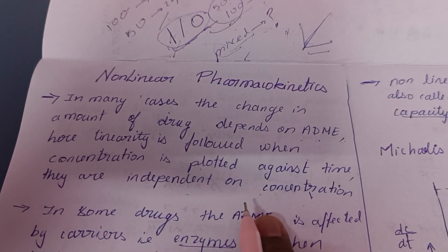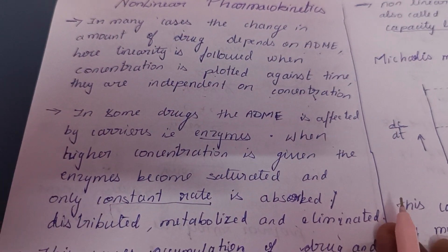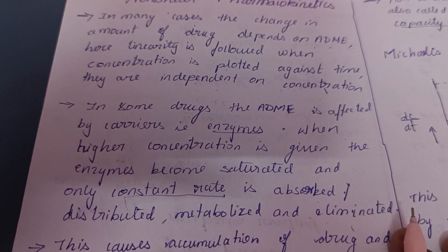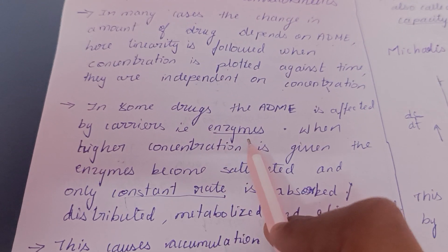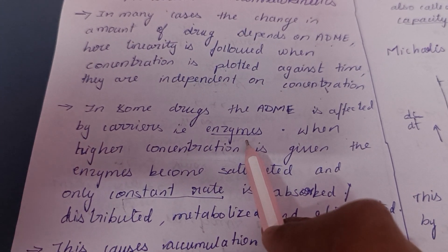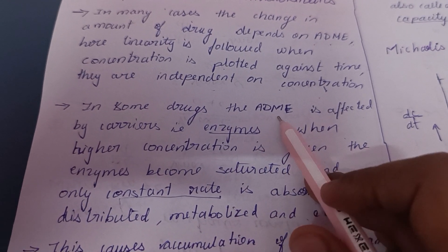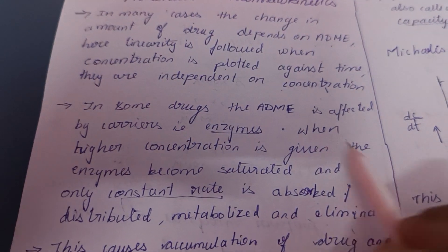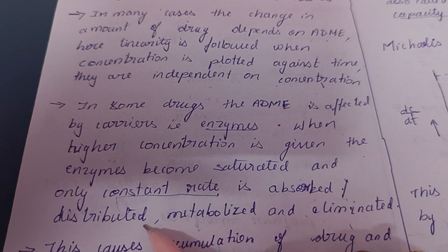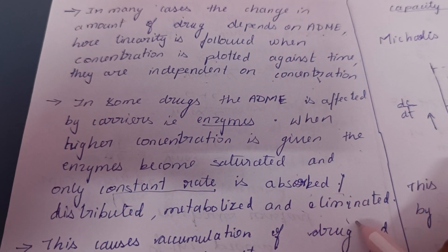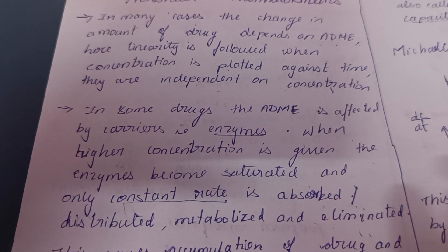If non-linearity happens, in some drugs the ADME is affected by carriers — that is enzymes. An enzyme is a bio-molecule, a bio-catalyst, that stimulates the reaction. In the ADME process, it affects the enzymes. When higher concentration is given, the enzymes become saturated and only a limited amount is absorbed, distributed, metabolized, and eliminated. Enzymes are combined with the substrate to form an enzyme-substrate complex and product.